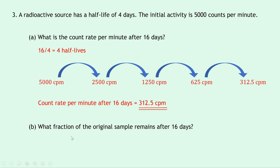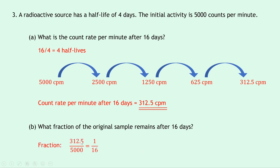Part B: what fraction of the original sample remains after 16 days? Just like in question 2, we take the final activity and divide by the initial activity: 312.5 ÷ 5,000 = 1/16.